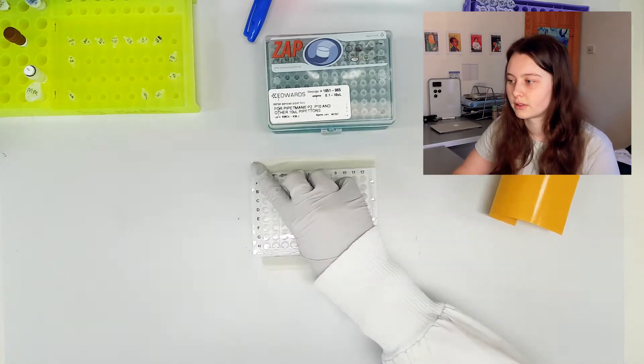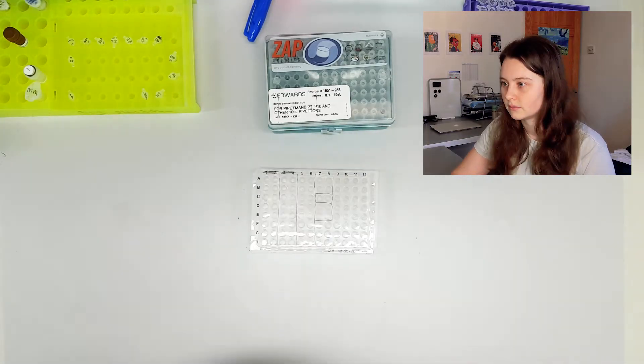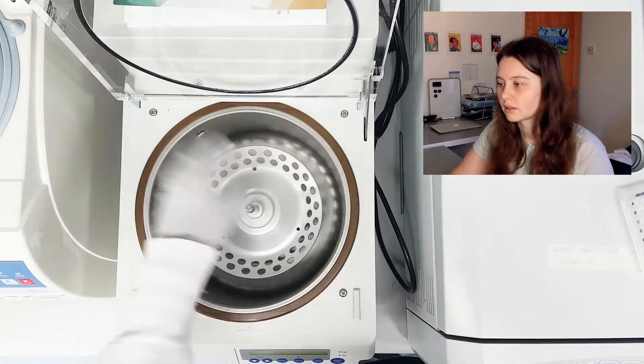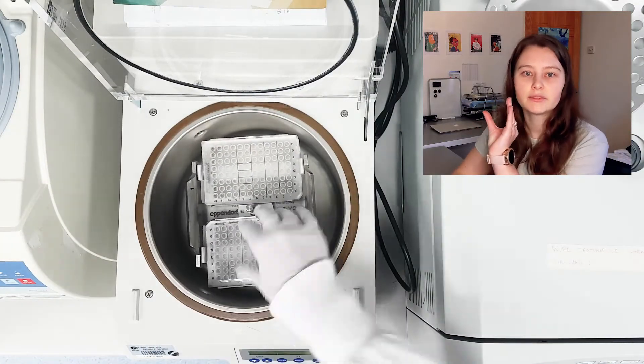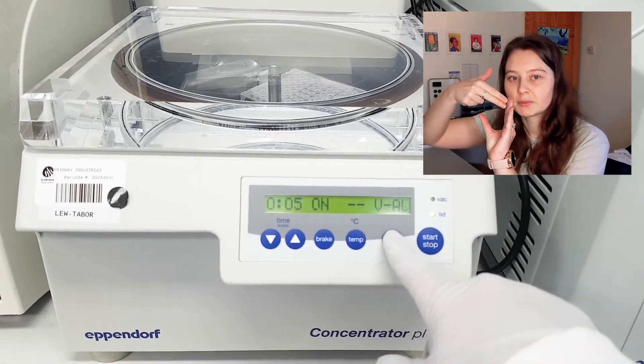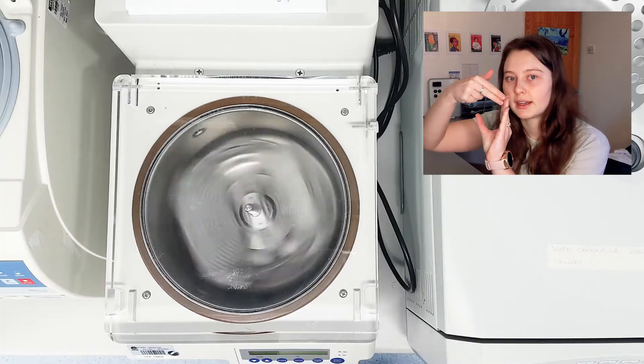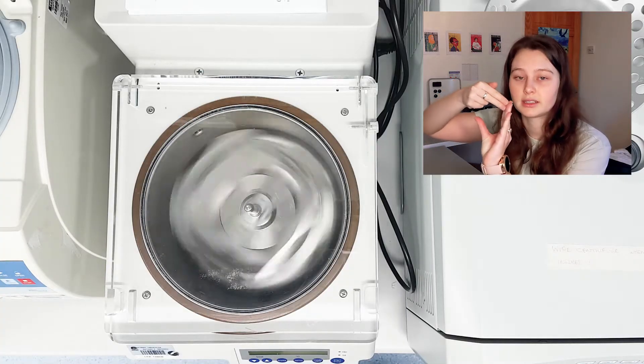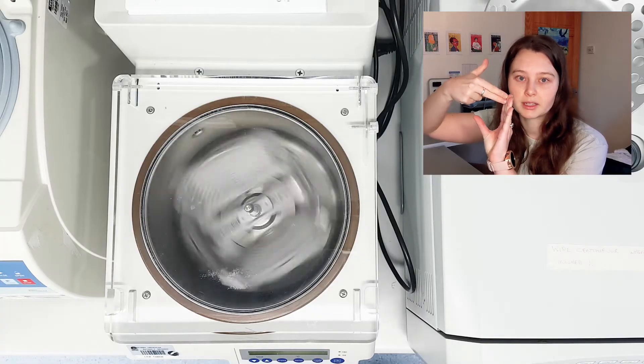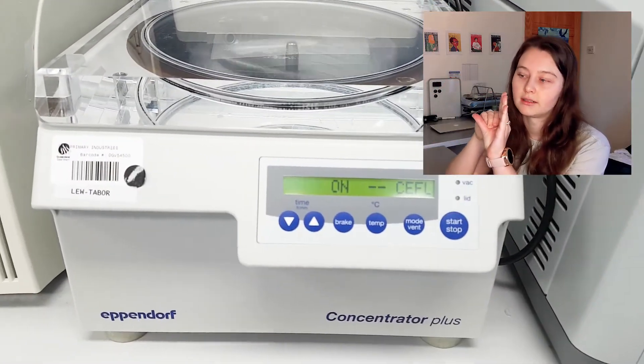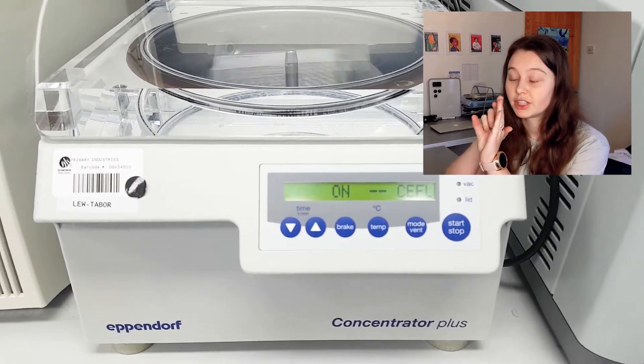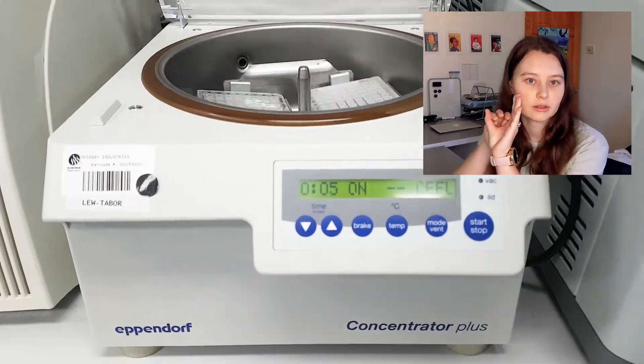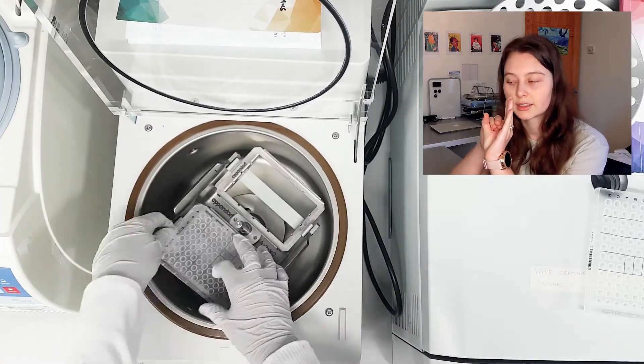So now we need to put our plate in the plate spinner. So if you looked at each individual well right now, because we've just been pipetting sample up onto the side, if we put this straight into the qPCR machine, the sample is going to be up here, the master mix is going to be down here, and you're not going to get a reaction because they're not sharing space. So you just give it a quick gentle spin so that it all sits at the bottom of the well and it's going to react together.